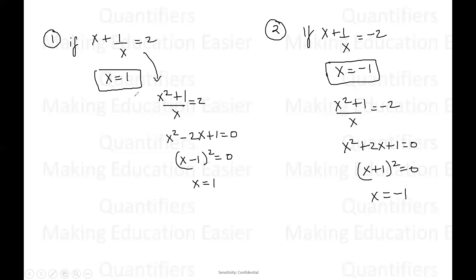I hope both results are clear. If X plus one by X is two, then X is equal to one. If X plus one by X is equal to negative two, then X is equal to negative one. Let us see the remaining results as well, and then we'll move on to the questions.